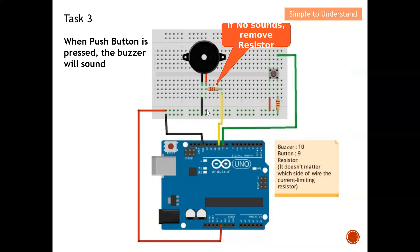Now, how do we activate the buzzer? You don't actually need a resistor for the buzzer. To turn it on, send five volts — current will flow and the buzzer will sound. To turn it off, send zero volts — no current flows and the buzzer produces no sound. The buzzer is also connected to five volts and ground through the Arduino board. With this, we are ready to do task number three: when the push button is pressed, the buzzer will sound.